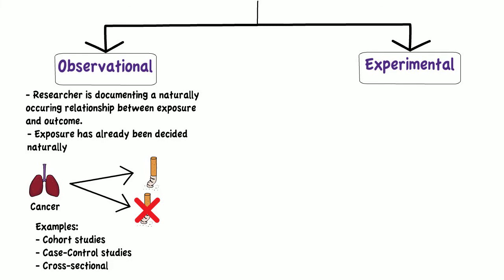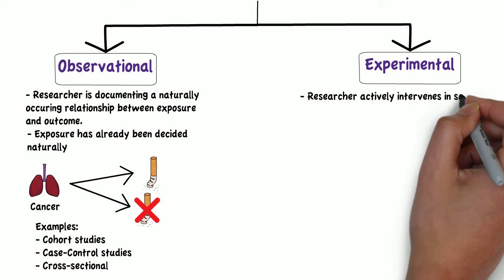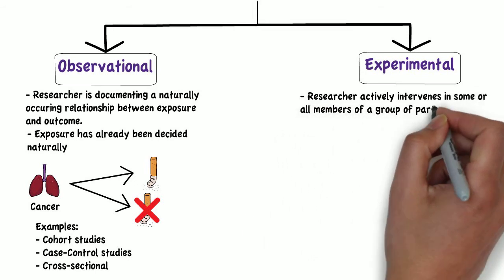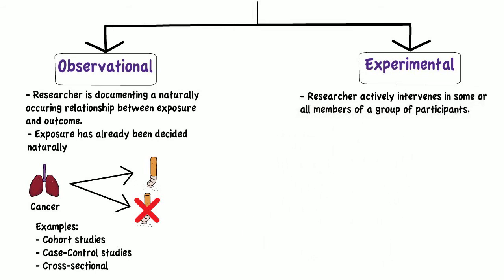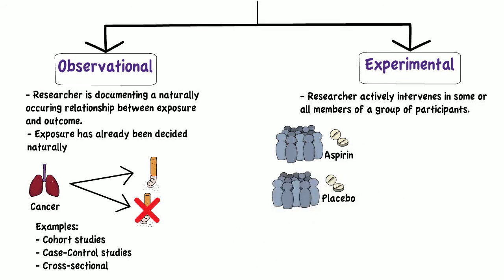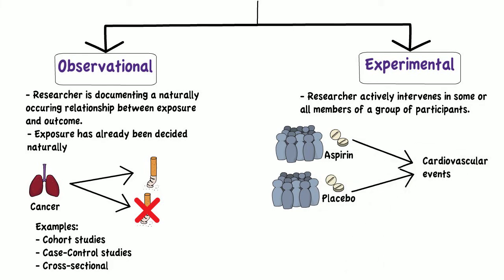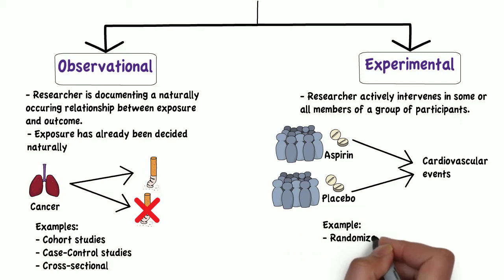Experimental studies are those where the researcher actively intervenes in some or all members of a group of participants. For example, a study could give aspirin to one group and a placebo to another group, then compare the effect on the risk of developing cardiovascular events. In this video we will talk about randomized controlled trials.